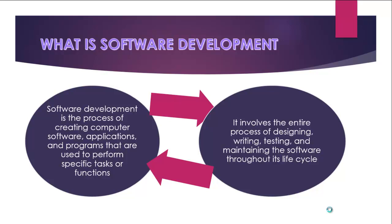The process of software development can vary depending on the type of software to be developed and the methodology used. Basically, the process involves different stages, and the type of software you are developing will determine the number of phases you go through. There are general processes or stages required for software development, and we are going to look at some of those stages.